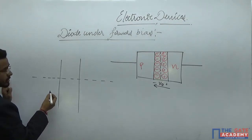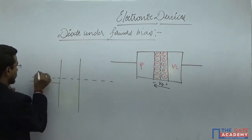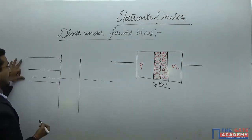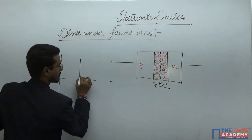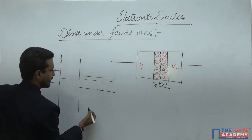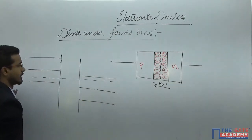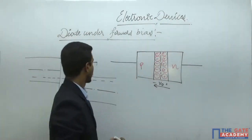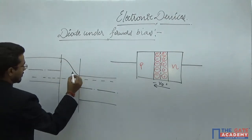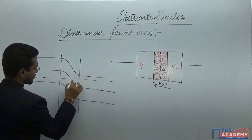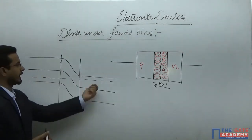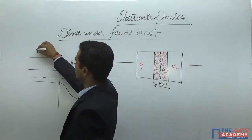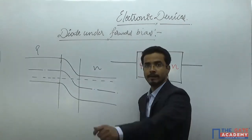For the P-type side, this will be EV, this is EFI — the intrinsic Fermi level on the P side. For the N-type semiconductor, this will be EC, this will be EFI on the N side. In the equilibrium condition, the Fermi level will be constant throughout the material. This is the Fermi level diagram of the P-N junction under equilibrium condition, with the P side and N side as discussed previously.